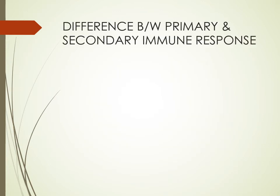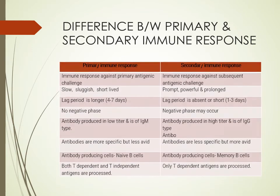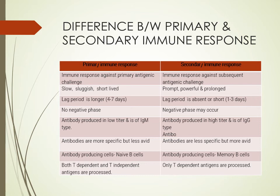The differences between primary and secondary immune response: primary is the response to first antigen challenge; secondary is the second exposure. The primary response is slow, sluggish, and of short duration. Secondary response is prompt, powerful, and prolonged. The lag period is longer in primary exposure and almost absent (one to three days) in secondary exposure. Antibody production in primary response is low titer and IgM type; in secondary it is high titer and predominantly IgG. Antibodies are more specific in secondary immune response than in primary.